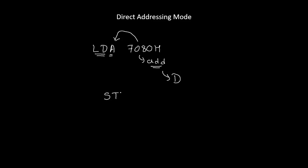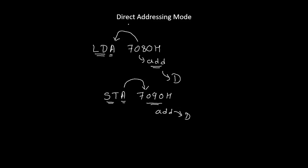Another example is STA 7090H. STA stands for store accumulator, so the content from the accumulator gets stored at address 7090H. Here, STA is the opcode and 7090H is the operand. Since the operand is an address (generally a four-digit number), its addressing mode is direct addressing mode.